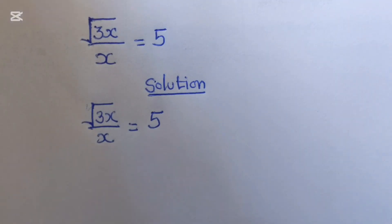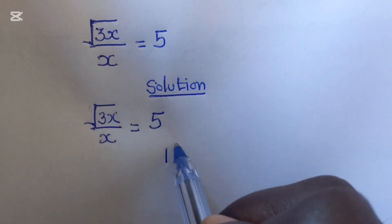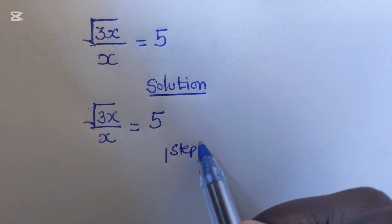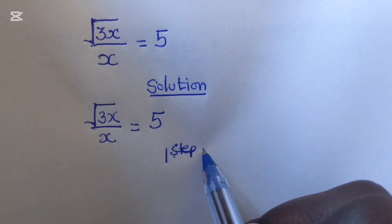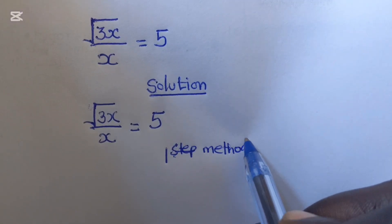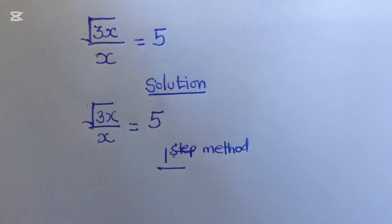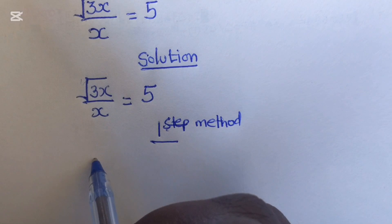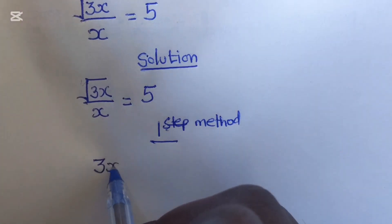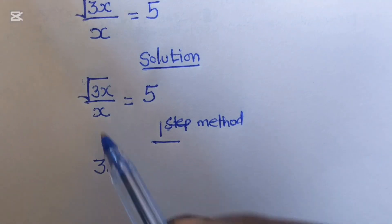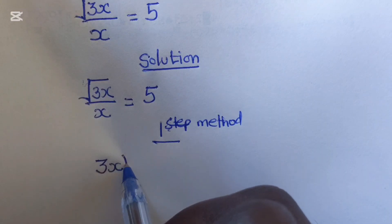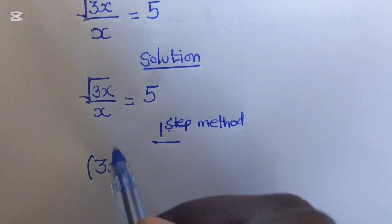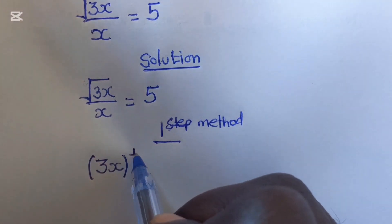Now there are different methods you can use for solving this equation. The first method is this one: we know that a square root can be written using a fractional exponent, so 3x inside a square root becomes 3x to the power of 1 over 2.